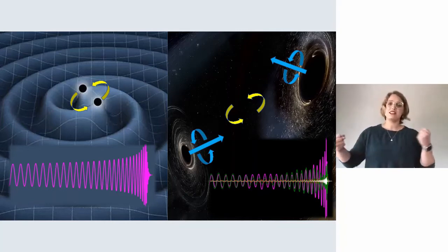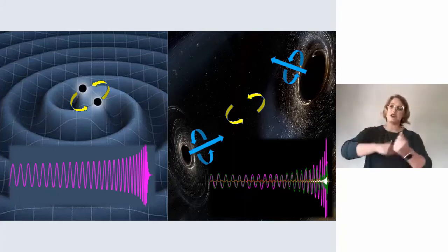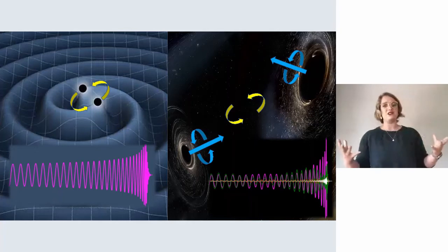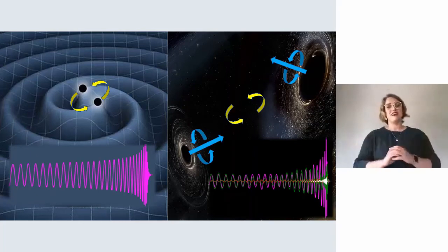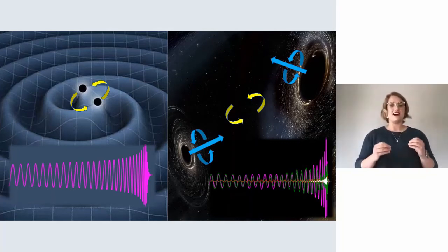Black holes can exist in pairs locked in a gravitational orbit around each other, like a dance, like in the left image. As they spiral closer together, eventually merging, the enormous energy they lose shines out into space not as light but as gravitational waves. The bottom left shows a typical gravitational wave signal. These tiny ripples in spacetime are the lens through which we can peer into gravity's extremes.